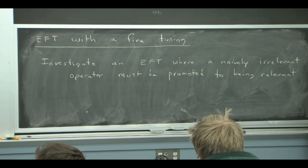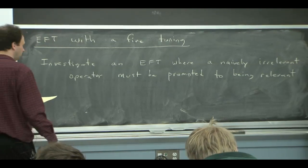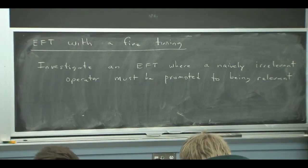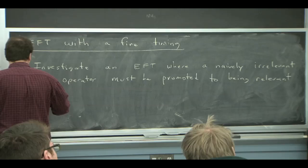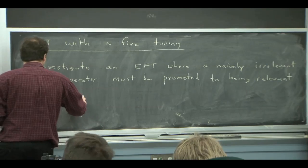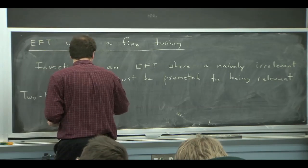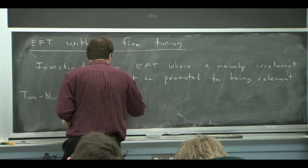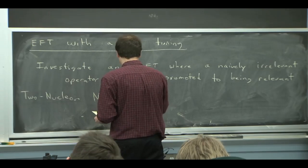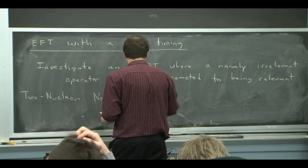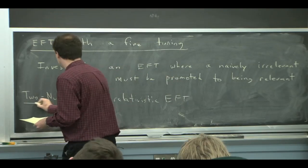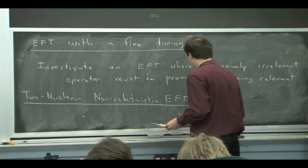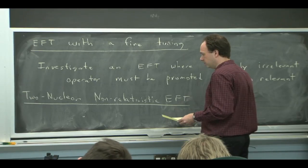And one way of thinking about it is that it just has such a large anomalous dimension that it actually ends up being totally relevant. And that is actually not a bad way of thinking about it. So the example we'll talk about is something called two-nucleon non-relativistic effective field theory. So you have two nucleons, a neutron and a proton, for example.